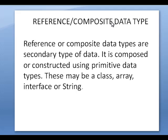Next one is reference data types, also called composite data types. Reference or composite data types are a secondary type of data composed or constructed using primitive data types. They include class, array, interface and string, all of which come under composite data types.